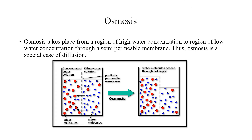Osmosis. Osmosis takes place from a region of high water concentration to a region of low water concentration through a semi-permeable membrane. Osmosis is a special case of diffusion. In this diagram, the first case shows a concentrated sugar solution. The reddish part represents sugar molecules, and the blue color shows the water molecules.